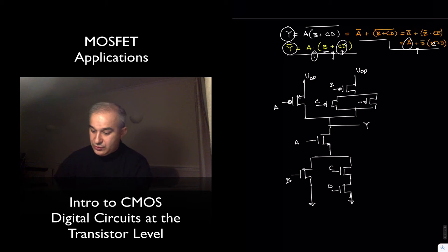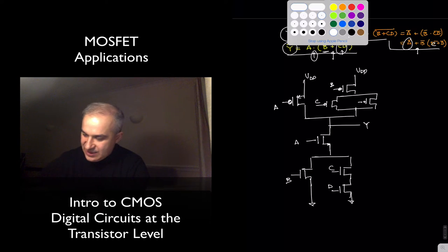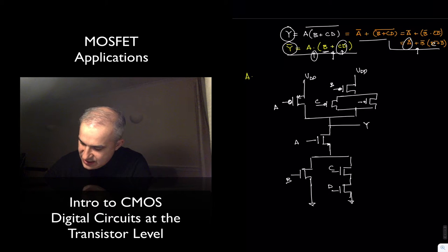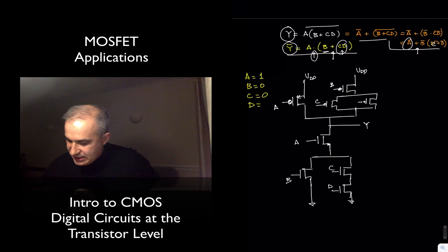Now, if we wanted to invert it, we can put an inverter at the output. Let's see how this will work for some values. So let's consider that, let's consider this situation. So we have A equals 1, B equals 0, C equals 0, and D equals 0.